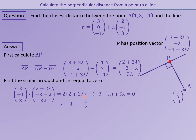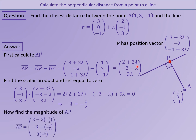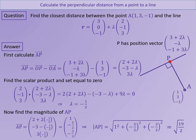If we wanted to find the position of point P, we would substitute lambda equals negative one half back into the position vector. However, we want to find the distance from A to P, so we substitute lambda equals negative one half into vector AP. This gives us the specific vector, and finding its magnitude gives us the answer: the square root of 19 over 2. So that is the shortest distance between point A and the line.